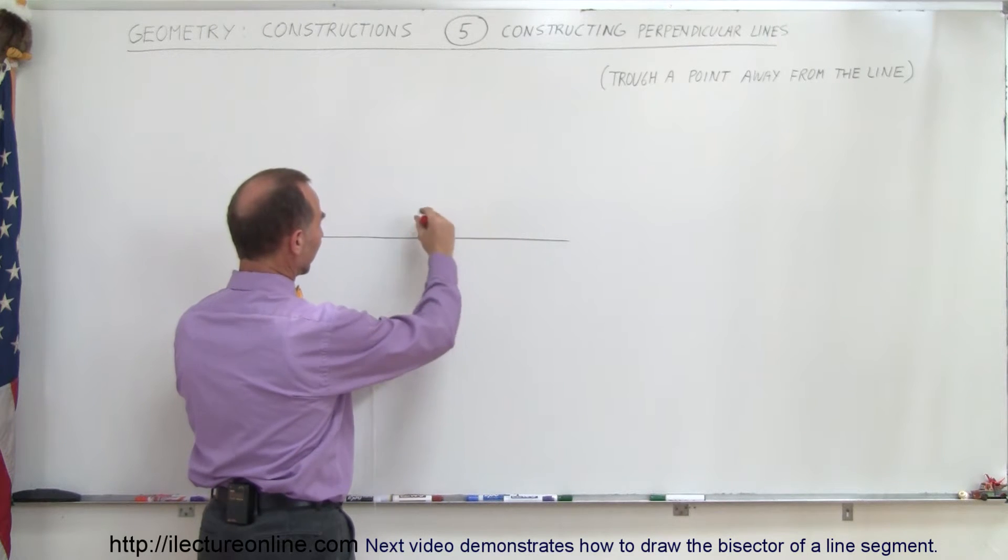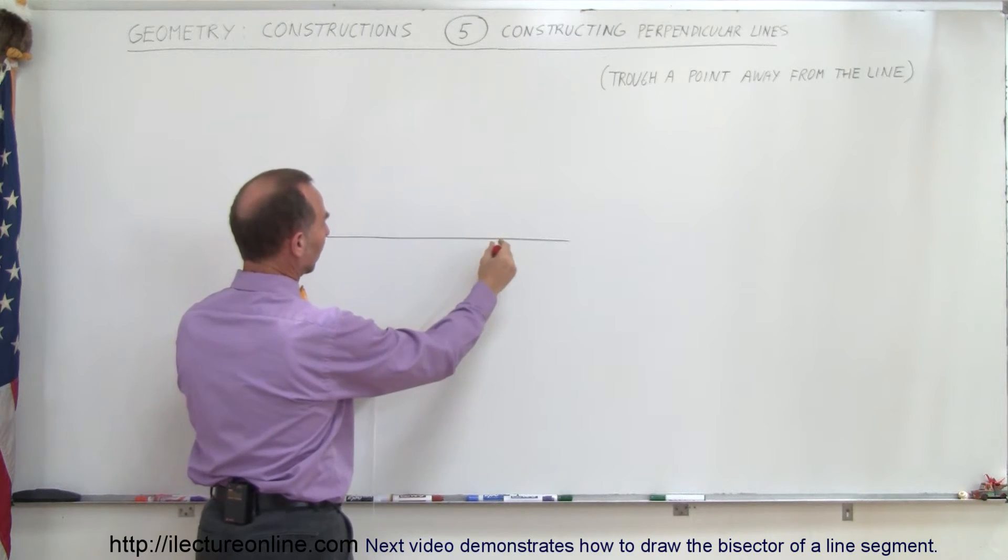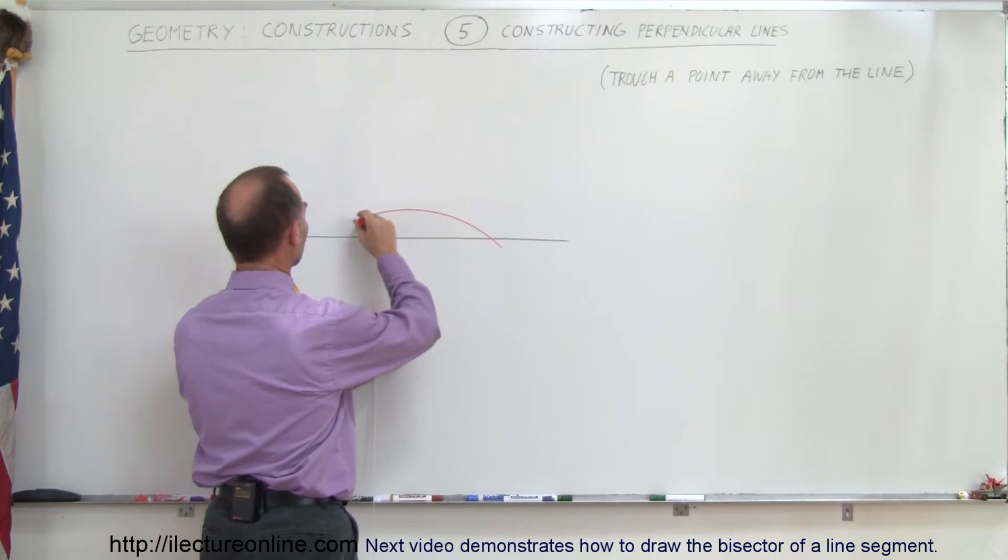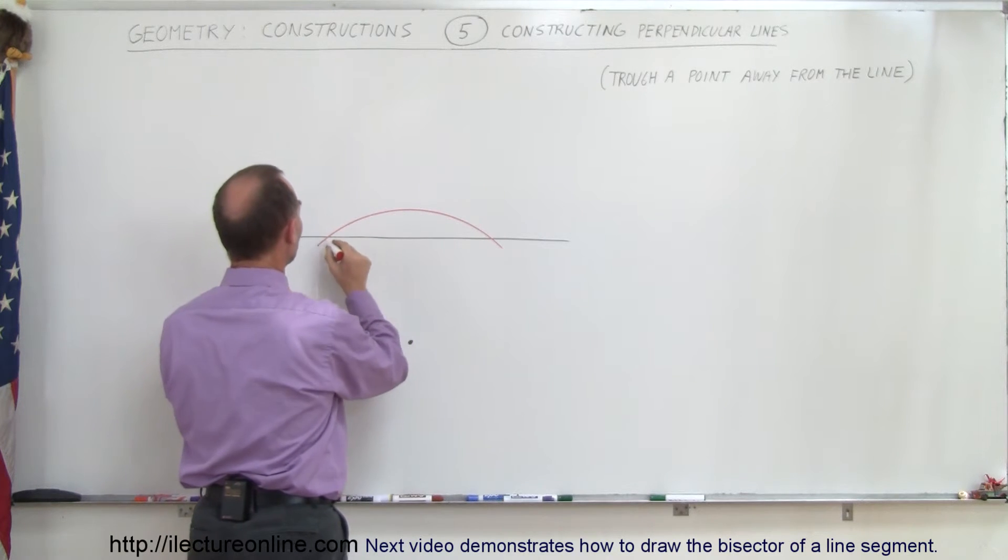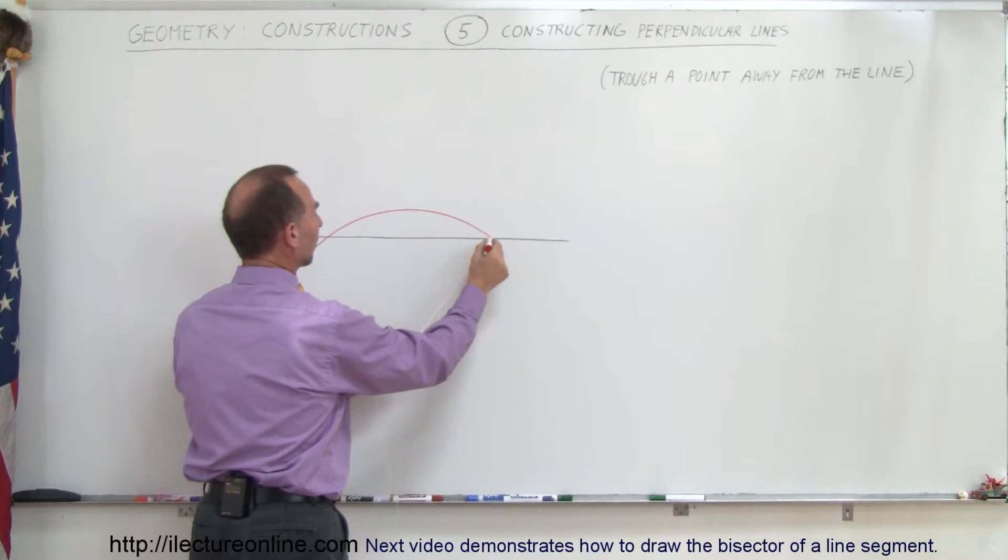Take your compass and make it bigger than the distance to the line, so that you can draw an arc like this, around like that, which gives you a point right there and a point right there.